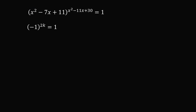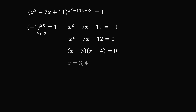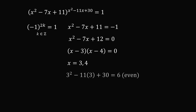For Case 3, we need the base to equal negative 1 and the exponent to be even. Setting x squared minus 7x plus 11 equal to negative 1 and adding 1 to both sides, we factor using 12 equals 3 times 4 and 3 plus 4 equals 7, giving (x minus 3)(x minus 4) equals 0, so x equals 3 or x equals 4. We now check that the exponent is even: substituting x equals 3 gives 9 minus 33 plus 30 equals 6, which is even; and x equals 4 gives 16 minus 44 plus 30 equals 2, also even. So x equals 3 and x equals 4 are also solutions.